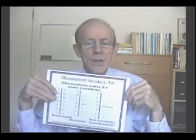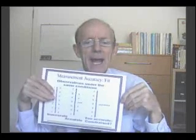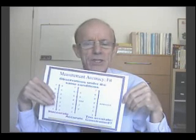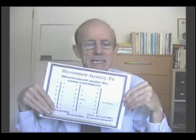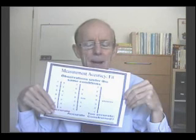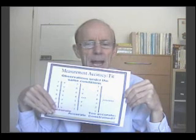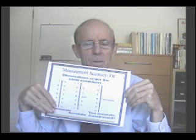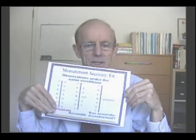A bigger problem than precision is accuracy: how accurately have we measured the individual? Accuracy and precision sound like the same thing, but they're not. Accuracy is a comparison with an external standard; precision is internal. For instance, on a bathroom scale you can measure your weight to the nearest gram — that's precision. But if the zero point is set in the wrong place, then that precision is wasted because the measurement is inaccurate.